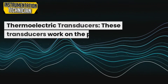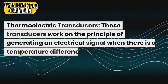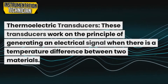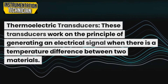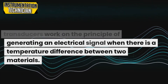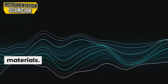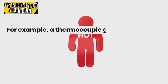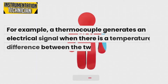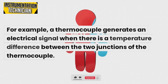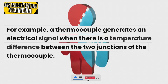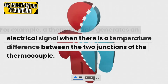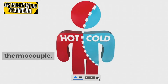Thermoelectric transducers work on the principle of generating an electrical signal when there is a temperature difference between two materials. For example, a thermocouple generates an electrical signal when there is a temperature difference between the two junctions of the thermocouple.